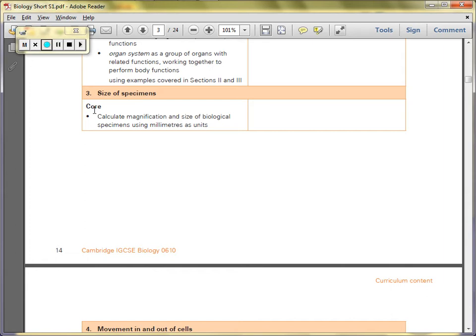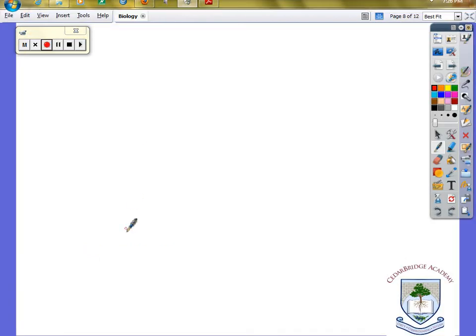It's just this. So as you always do, copy that onto your notes and then you make the notes. This should be like a two minute video, watch it take like ten. Calculate magnification and size of biological specimens using measurements, millimeters as units.